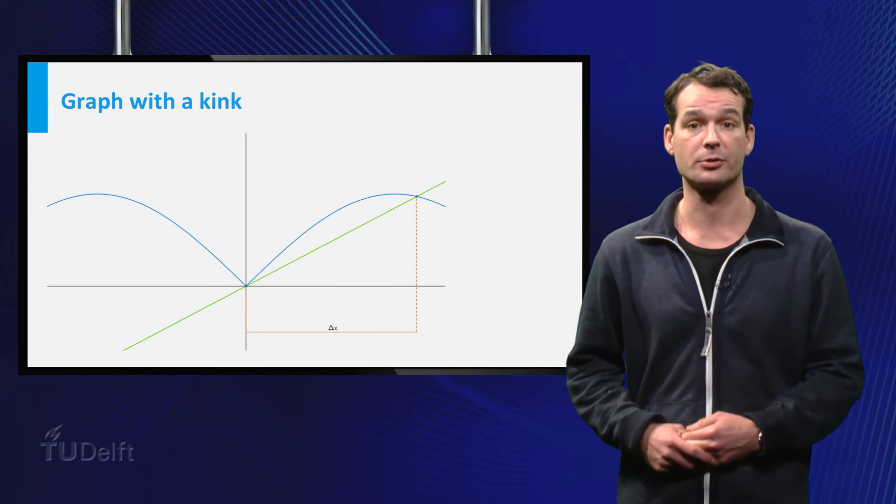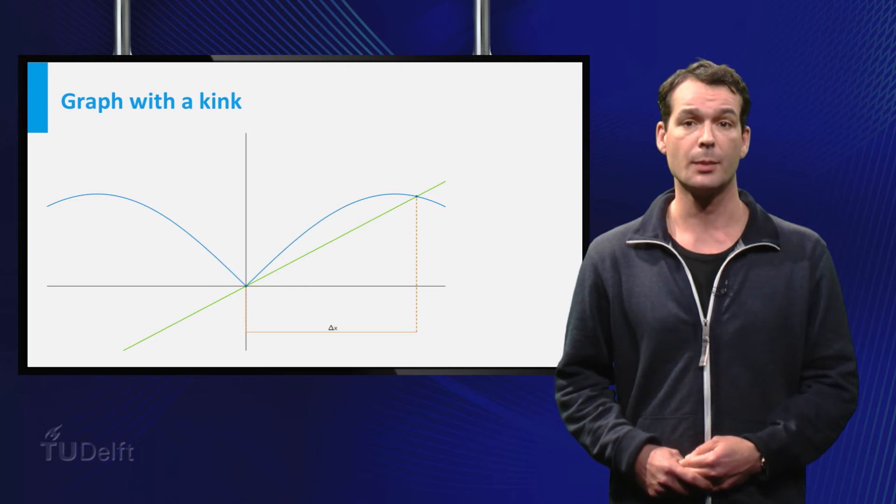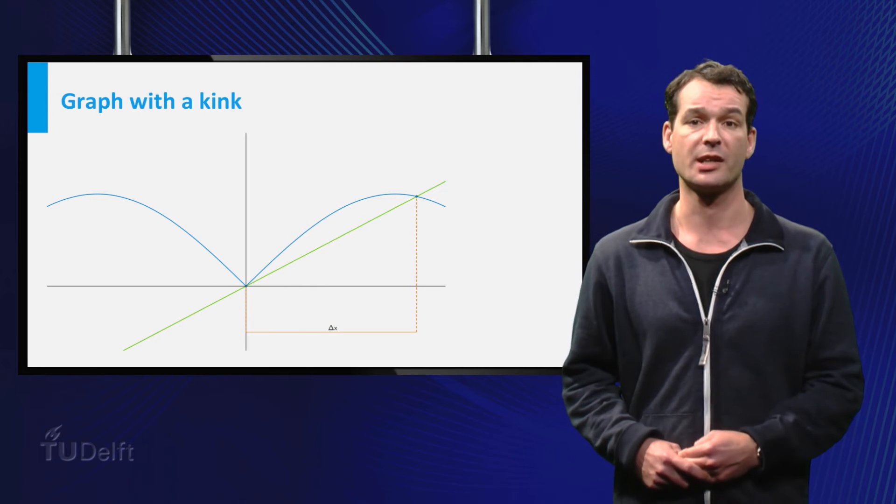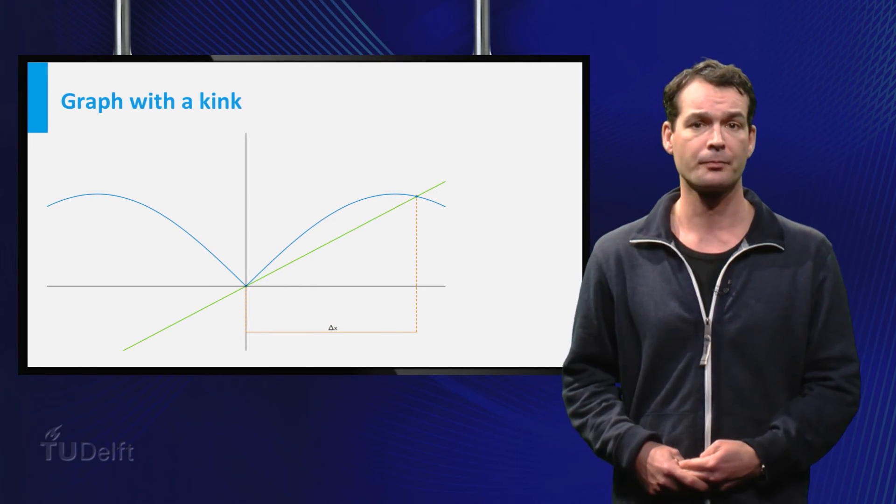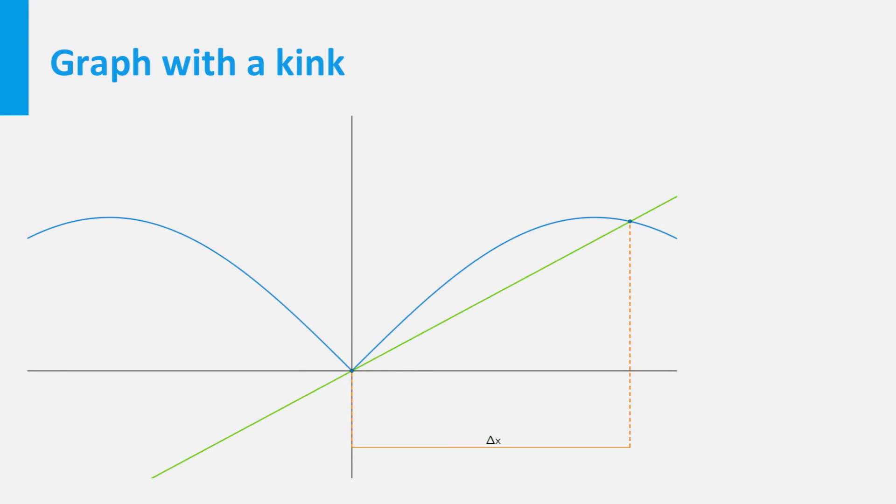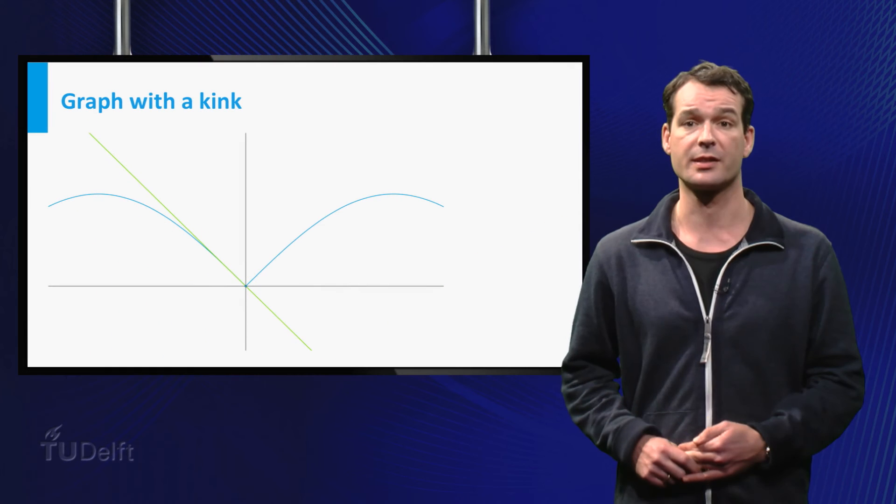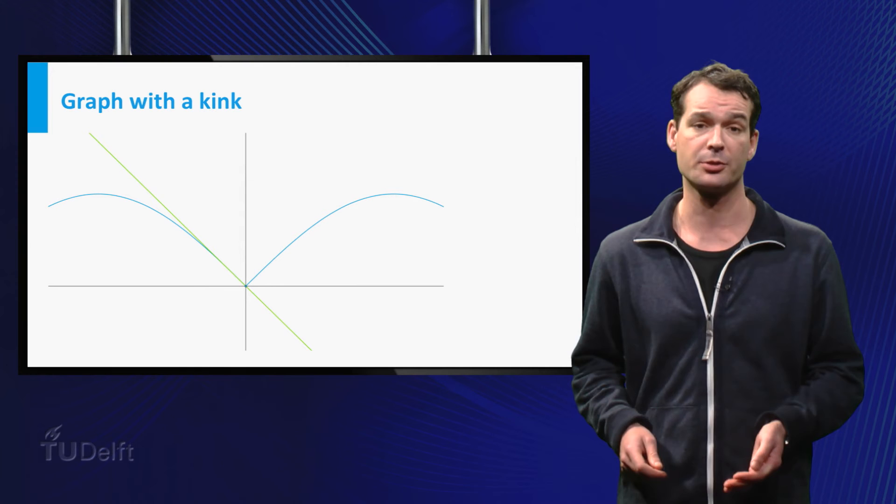Next we look at the function whose graph has a kink in it, the absolute value of sine of x which has a kink at zero. We do the same as in the previous example. We approximate the tangent line with delta x positive and then with delta x negative. We see that we get different lines again so this function is not differentiable at zero.